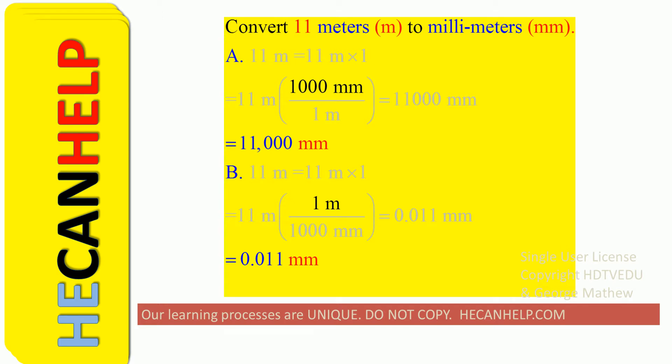Is it A, 11,000 millimeters, or is it B, 0.011 millimeters?